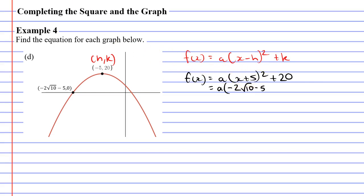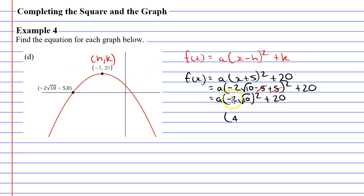So I'm going to write x plus 5 next to that value, squared, and then plus 20 equals 0. Looking in the brackets, I've got minus 5 plus 5, which cancels out. So I get A times (negative 2 root 10) squared plus 20 equals 0. If I square negative 2, that becomes positive 4, because negative 2 times negative 2 is positive 4. And if I square the square root of 10, it undoes the square root and becomes just 10. So this is 4 times 10, giving us 40A plus 20 equals 0.